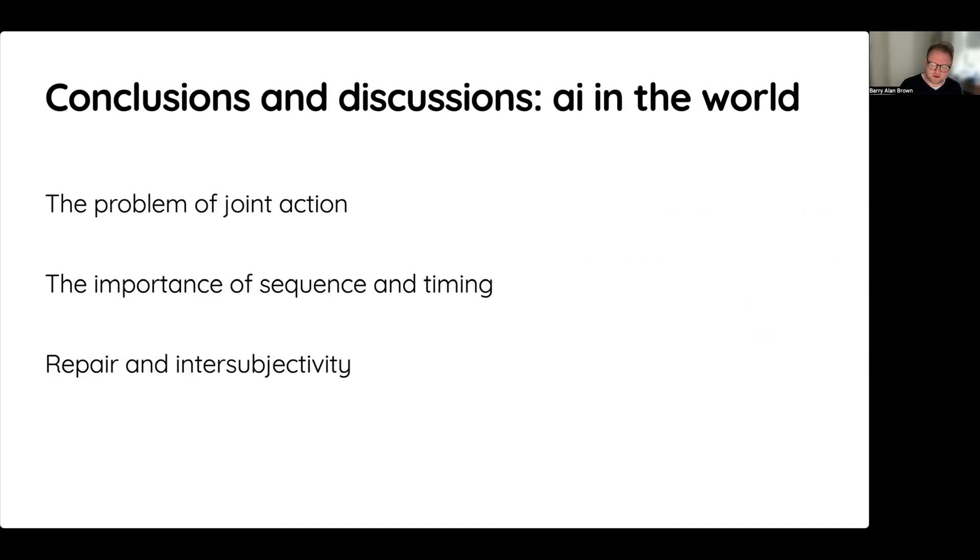The key problem, one of the key problems perhaps we identify, is this problem of joint action—that self-driving cars and other road users need to produce action together, and this is something that they still clearly struggle with. They can deal with the kinematics of the road, but this production of joint action is much more difficult.